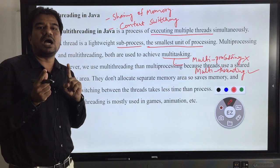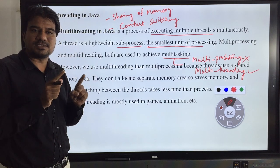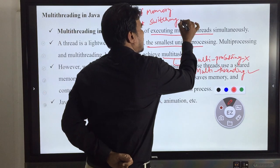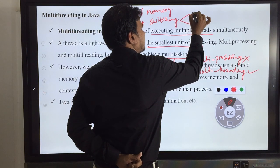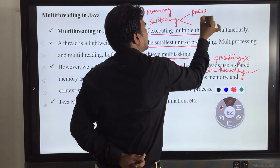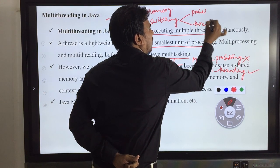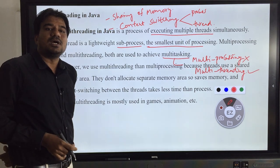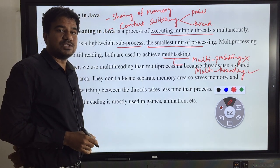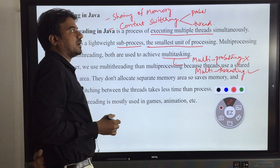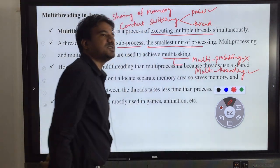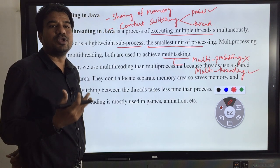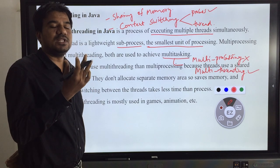Context switching refers to how two processes or two threads shift between each other. Context switching is allowed in both cases — in case of a process and in case of a thread. But which one is costlier and which one is lighter plays a vital role. The context switching between processes is heavyweight. It requires a lot of CPU resources and computer resources to perform context switching between processes.